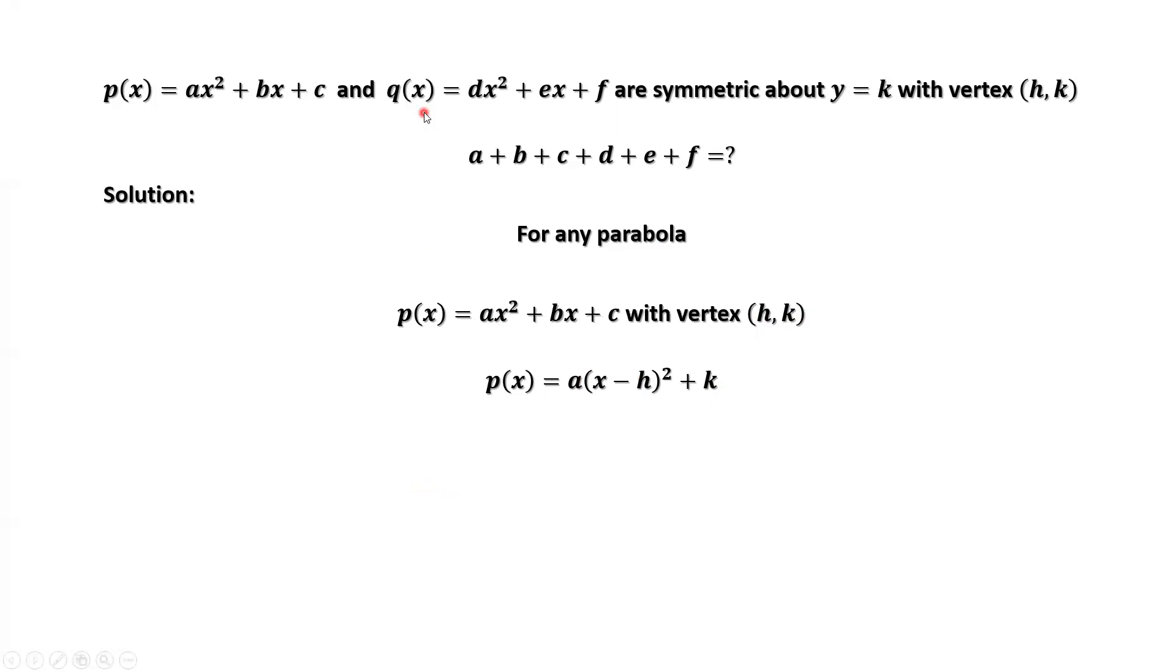Because the second parabola is symmetric with respect to y equals k, this horizontal line, we can imply Q of x equals negative A times x minus h squared plus k.